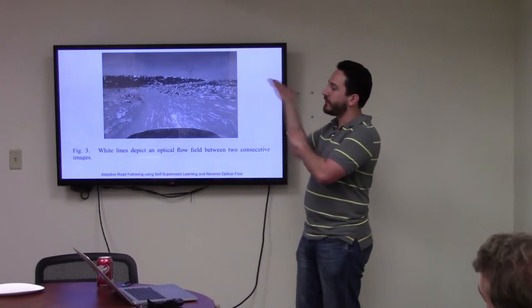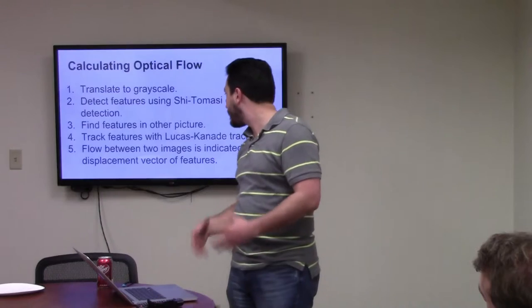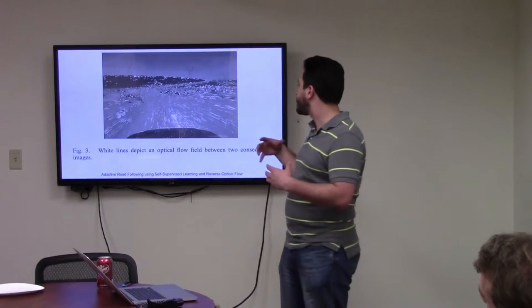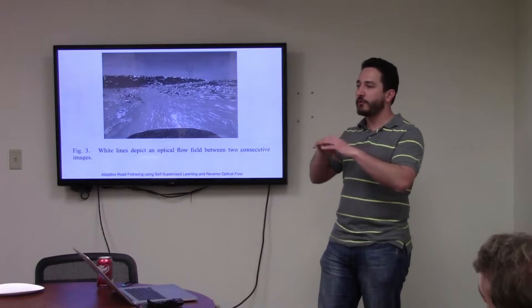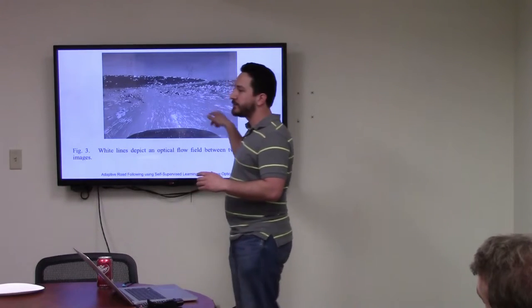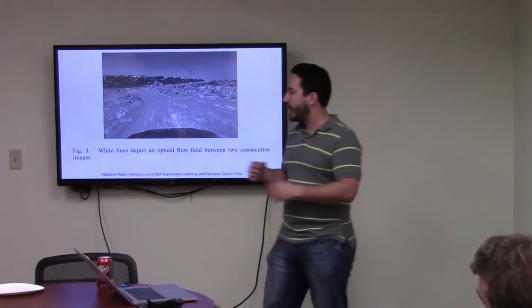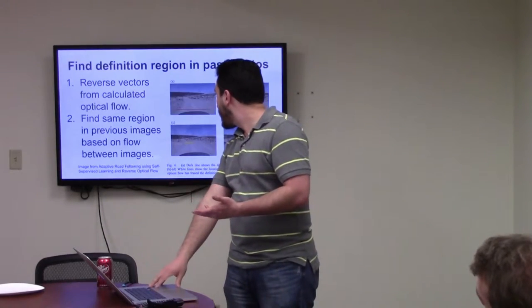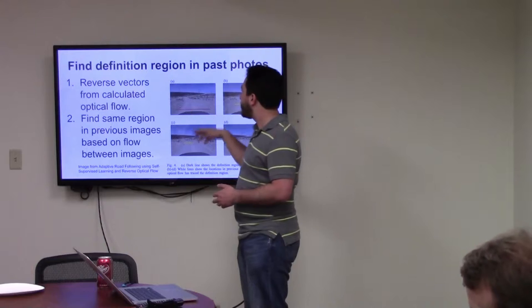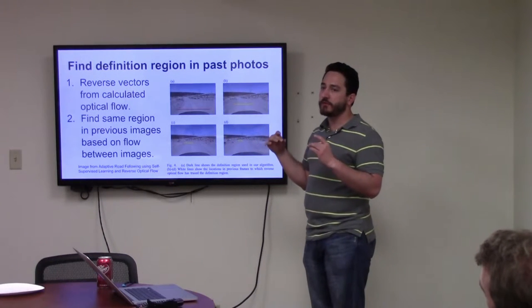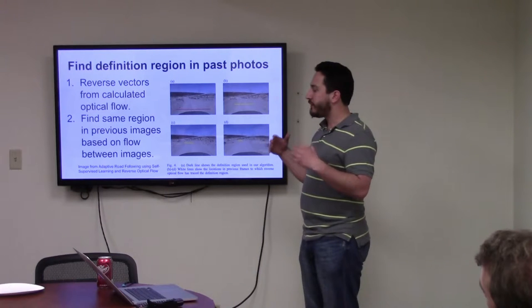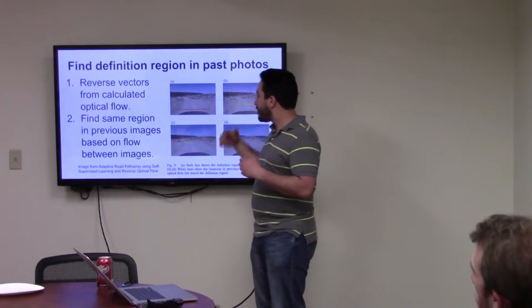It would find all of the edges in the image and then it would look at the previous frame that it was comparing and it would find where those edges existed in one image versus the other image. And based off of that, that was how these things were flowing between the pictures. So like these white lines that you're seeing here, there was probably like a little rock here and a little rock here, and it defined those as being the same rock.